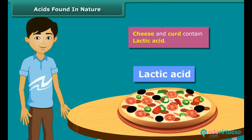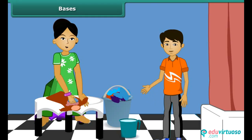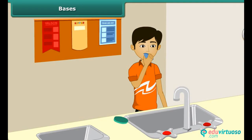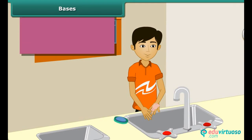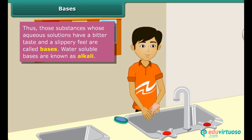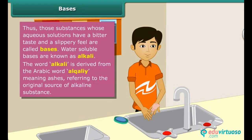We wash our clothes every day with soap — do you know which kind of solution it is? Soap solution tastes bitter and on rubbing on the palm gives a slippery feeling, because it contains a base. Those substances whose aqueous solutions have a bitter taste and a slippery feel are called bases. Water-soluble bases are known as alkaline. The word 'alkali' is derived from the Arabic word 'al-qali,' meaning ashes, referring to the original source of alkaline substances.